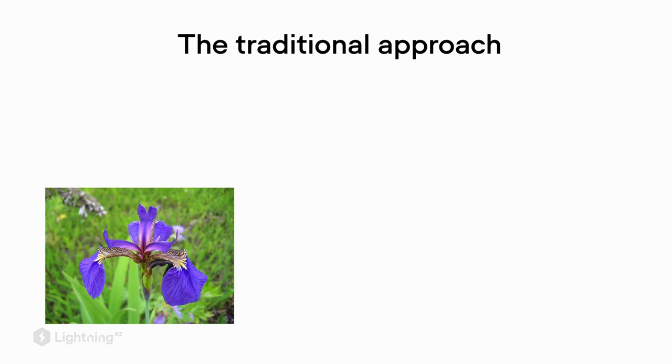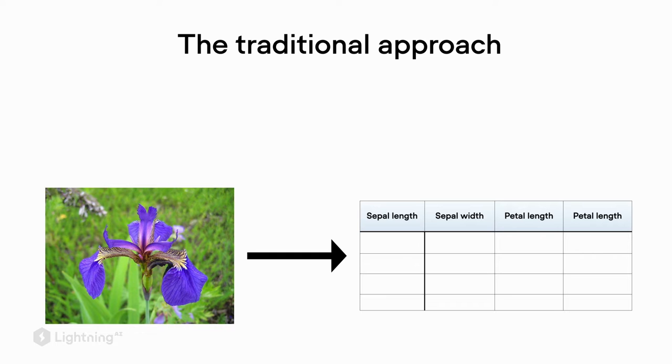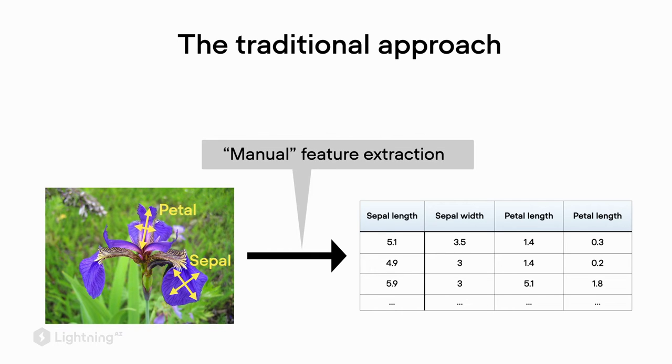On the left-hand side, we see an image of an iris flower where we have the petal and the sepal dimensions. Then we extract these by doing measurements, for example, applying a ruler and writing down these numbers as a feature vector. This would be a manual feature extraction step where we or someone else is taking these measurements.